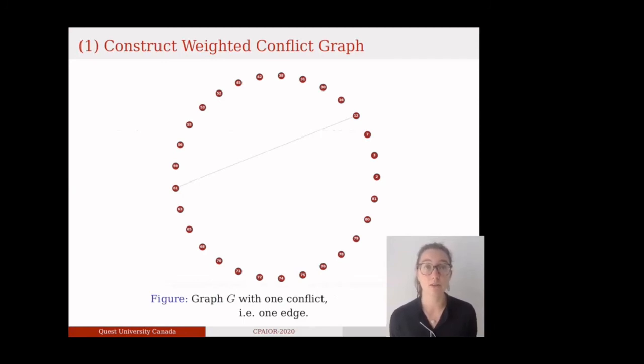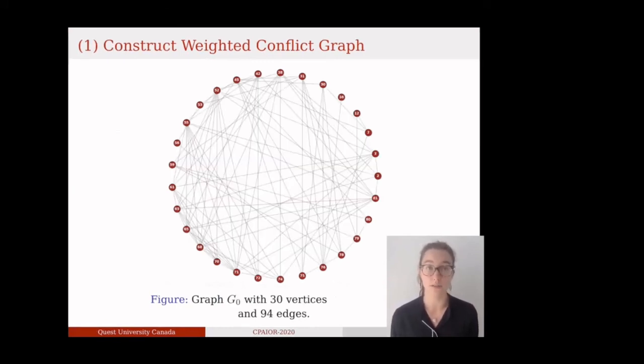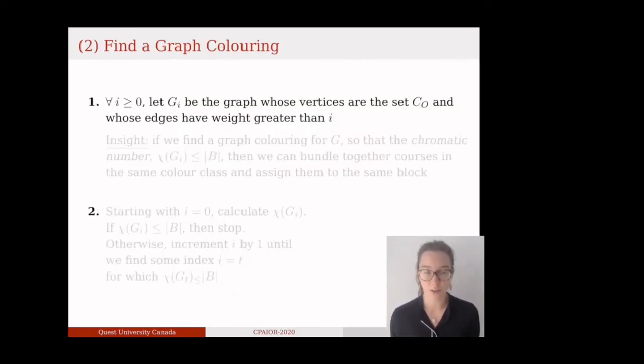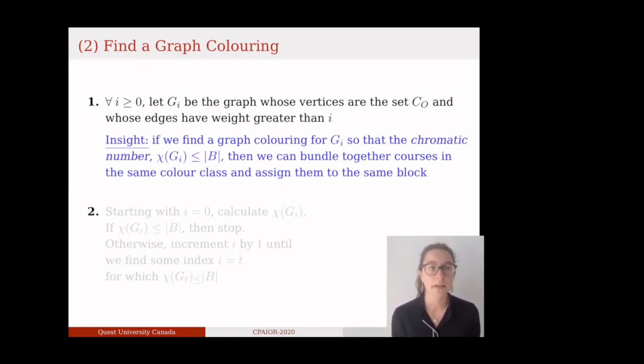Step two, find a graph coloring. For each non-negative integer I, let G_I be the graph whose vertices are CO and whose edges have weight greater than I. One can think of it this way. The bigger the integer I, the lower the density of graph G_I. Now, recall that for each G_I, the chromatic number chi of G_I is the fewest number of colors needed to color the vertices of G_I so that no pair of vertices joined by an edge share the same color. Thus, if we find a graph coloring for G_I whose chromatic number is B, then we could bundle those one-section courses in the same color class together and assign them to the same block in our optimal timetable. So, how can I do so? Well, starting with i equals 0, calculate chi of G_I. If chi of G_I is at most B, then stop. Otherwise, increment i by 1 until we find some index i equals T for which chi of G_T is at most B.